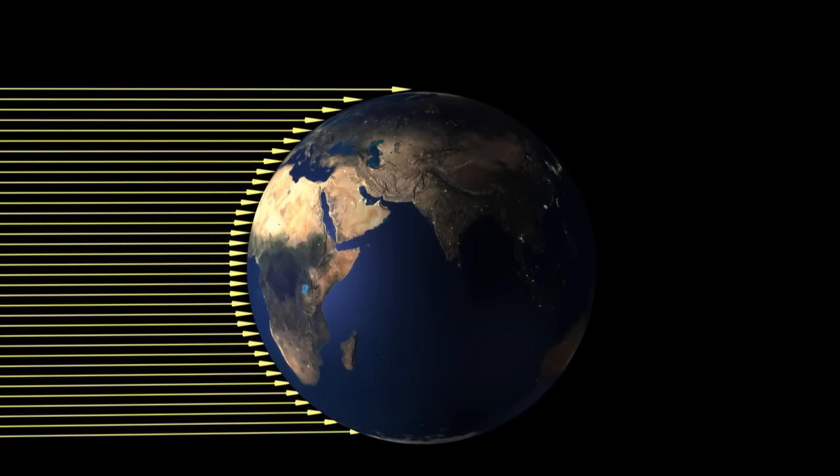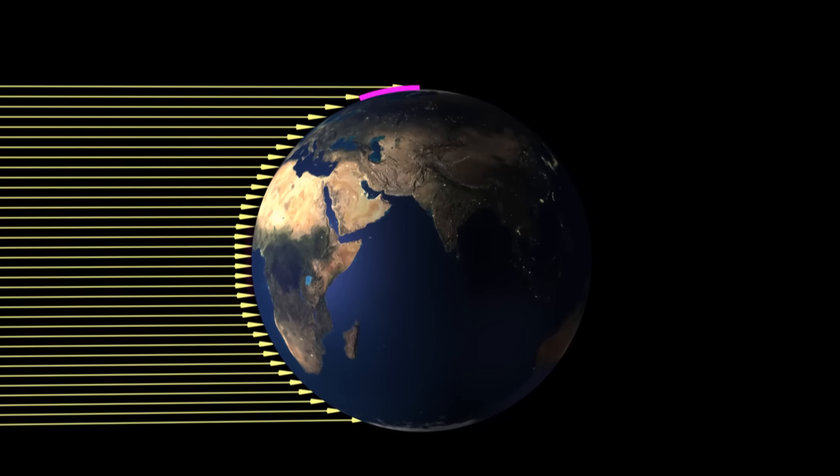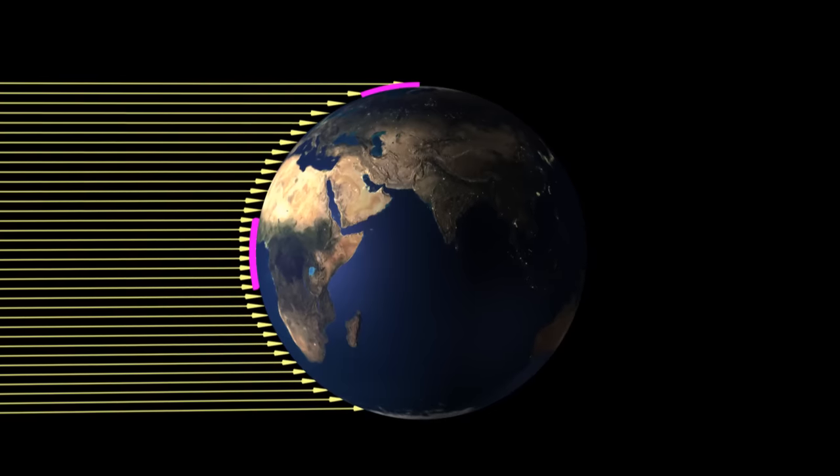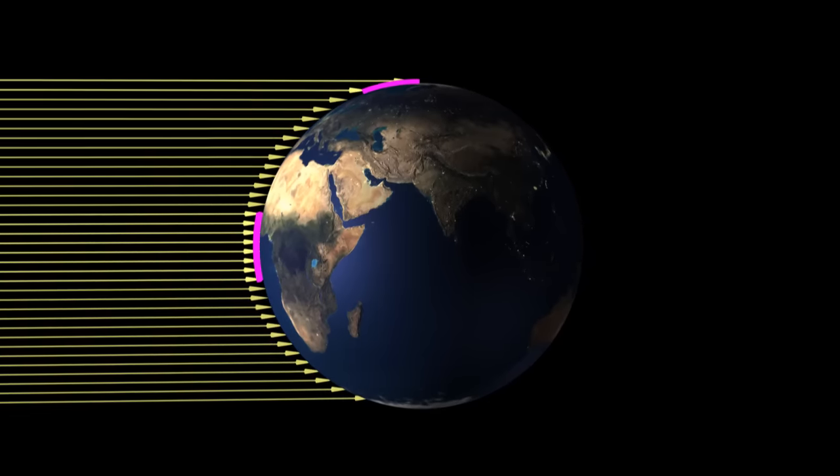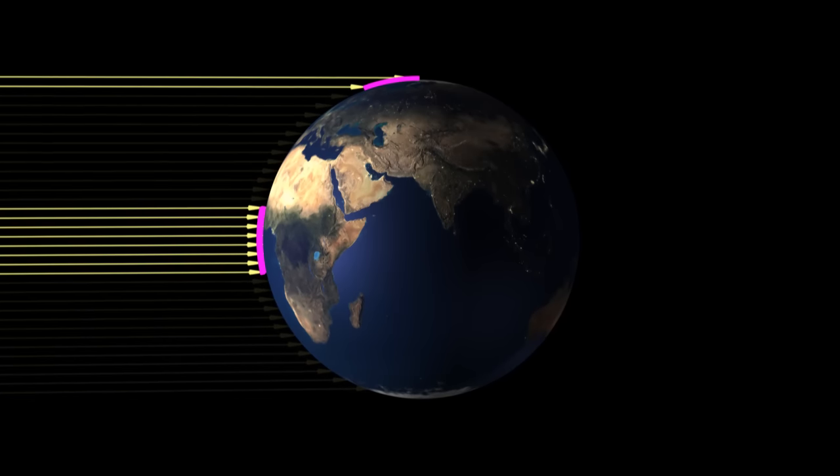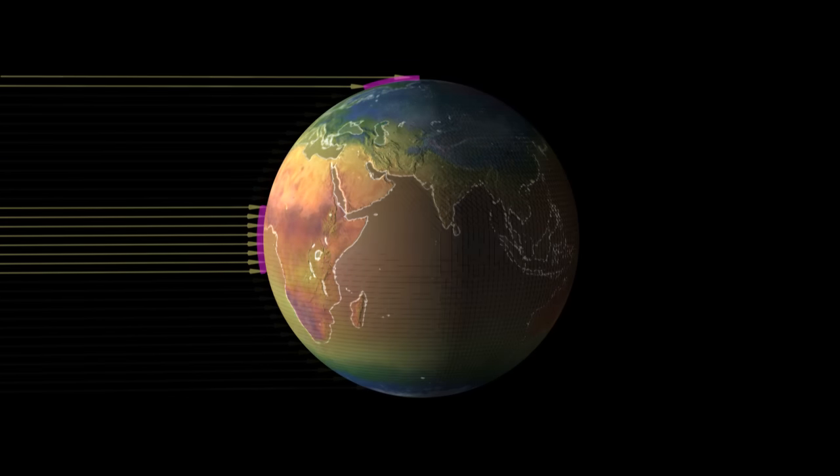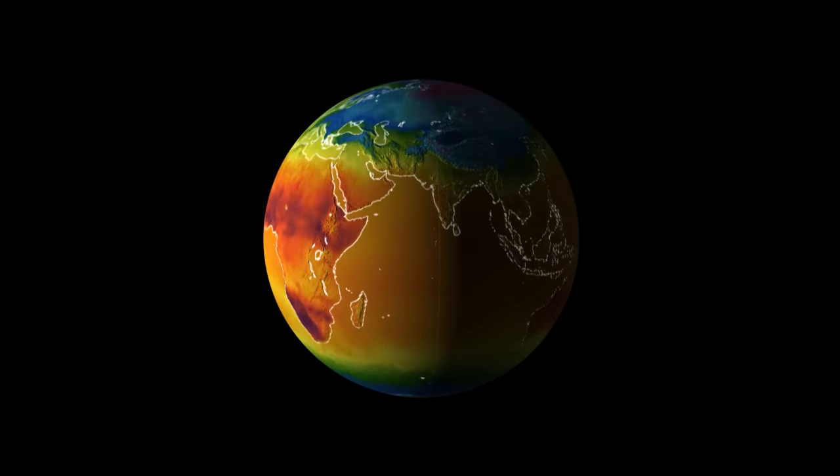Let's look at two patches of ground, one at the north pole and one at the equator. Both these patches are the same size. But the equator patch gets more sunlight because the light is hitting it directly. That's why it's so hot at the equator.